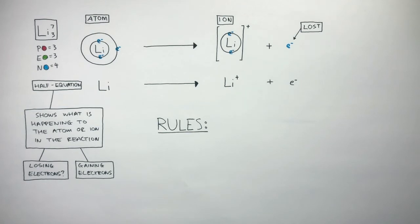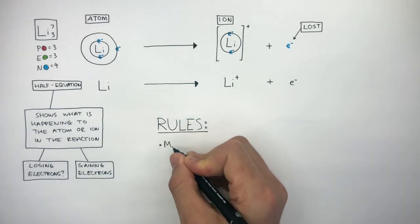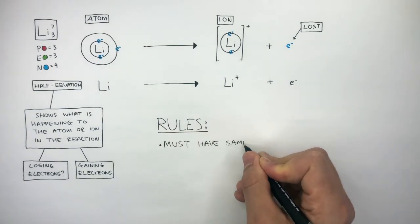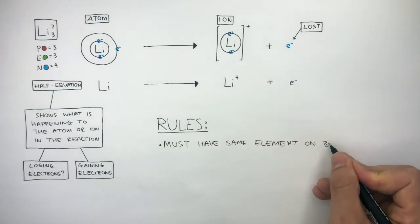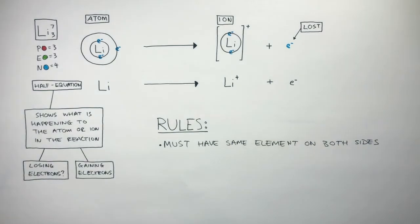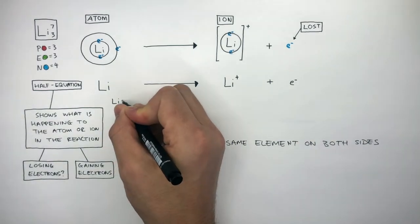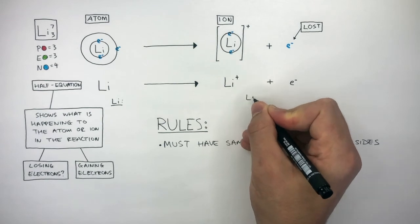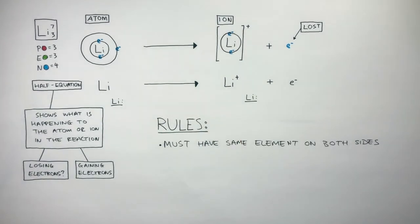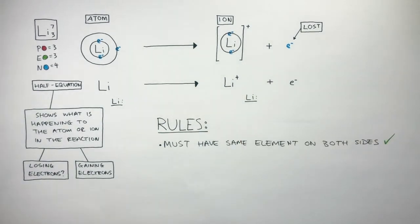The first rule is the half equation must have the same elements on both sides. In this half equation we can see there is a lithium atom on the left and a lithium cation on the right, so this half equation is correct so far.